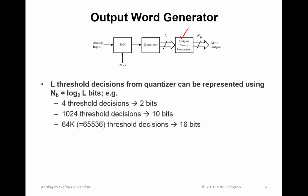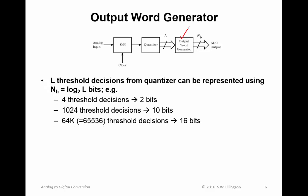Finally the output word generator. The L threshold decisions from the quantizer can be represented by a smaller number of bits. The relationship is that the number of bits needed is log base 2 of the number of threshold decisions. So for example if we have four threshold decisions we can represent that using two bits: one, two, three, four could be represented as zero zero, zero one, one zero, and one one. Similarly if we had 1024 threshold decisions, log base 2 of 1024 is 10, so 10 bits is required. If we had 64K, that's 65,536 threshold decisions requiring 16 bits.